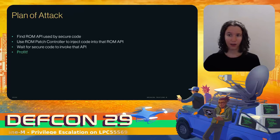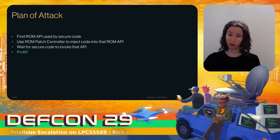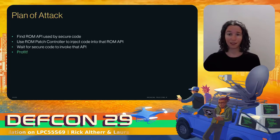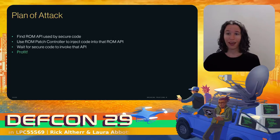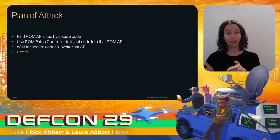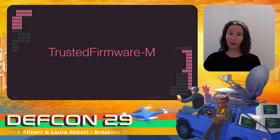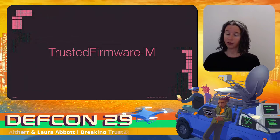Okay, this is DEF CON, so clearly it's time to do something interesting with this hardware. We can put this all together to do an exploit. Step one: find a ROM API used by secure code. Step two: use the ROM patcher from non-secure mode to change the code of that API since that code exists in ROM space. Step three: have the secure code invoke that API and now you've won.